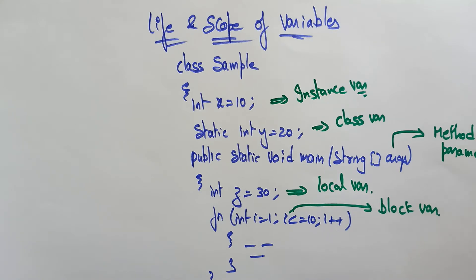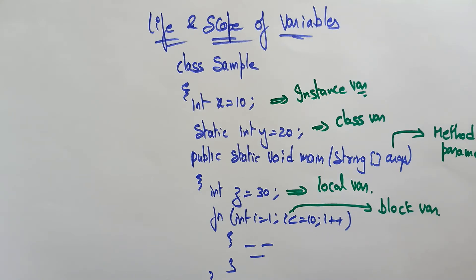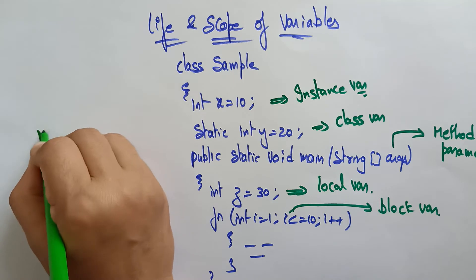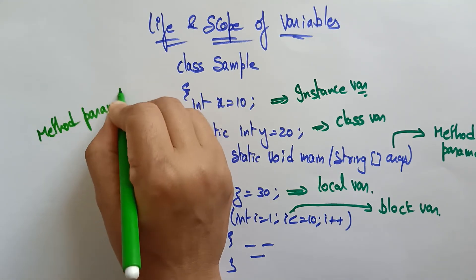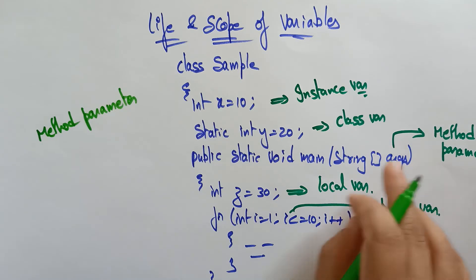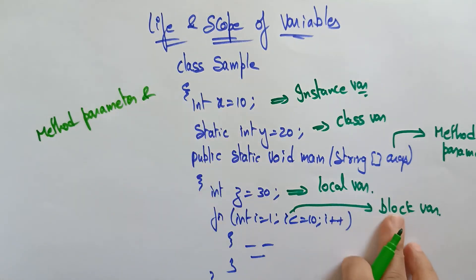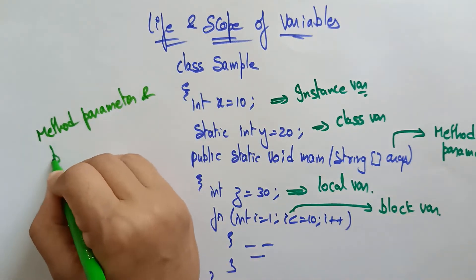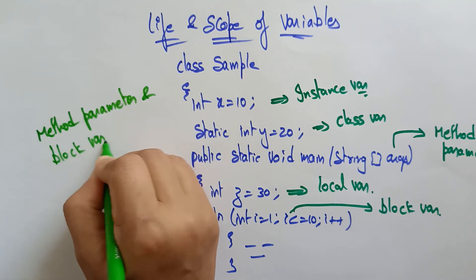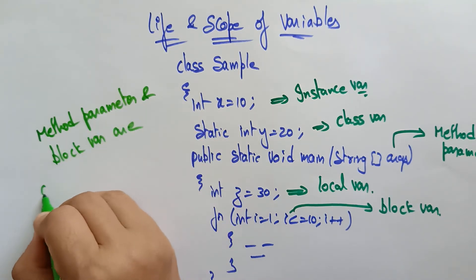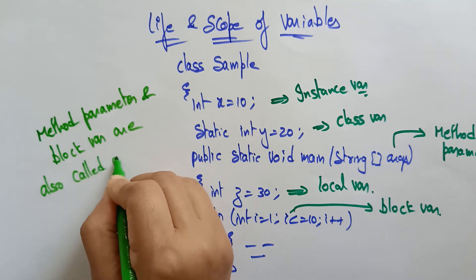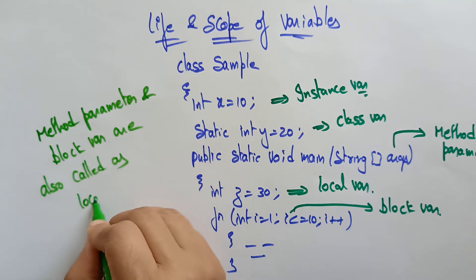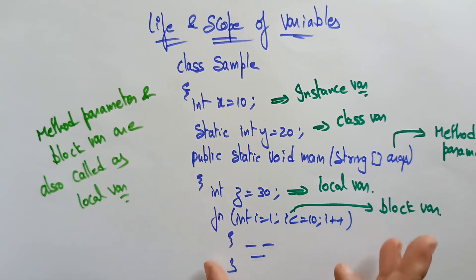Remember this point: method parameters and block variables are also called local variables, because their life is until that main block only.